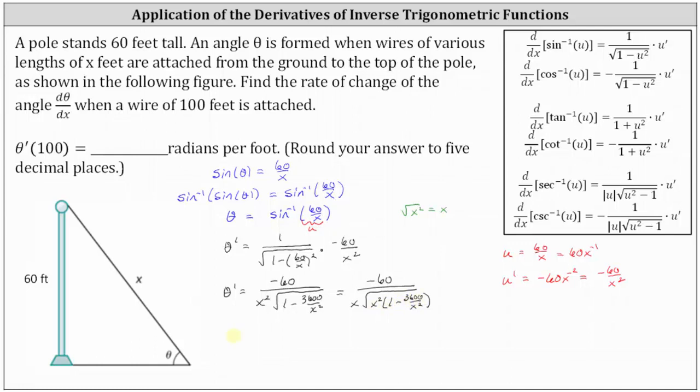So let's write the derivative as θ' = -60/(x√(x² - 3600)). Again, this isn't required, but you can see it is more simplified in this form.